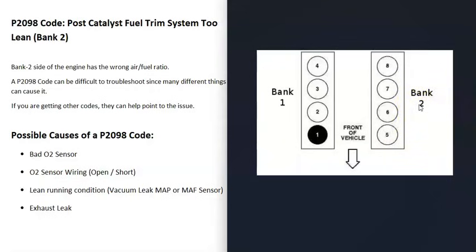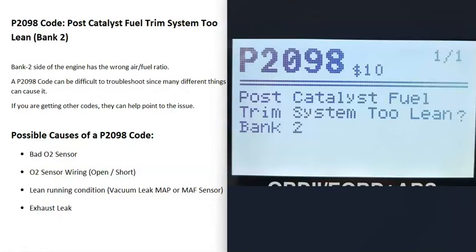Bank 2 is the side of the engine that's having the problems. If you have a four-cylinder engine, it wouldn't matter — you'd only have one bank. One thing about a P2098 code is that it can be difficult to troubleshoot because it can be caused by many different things. If you're getting other codes, that can help point you to the problem — for example, a mass airflow sensor (MAF) code would be worth investigating first.